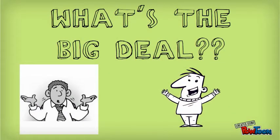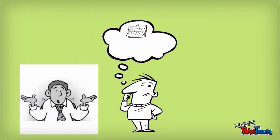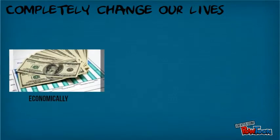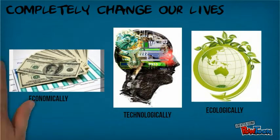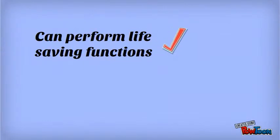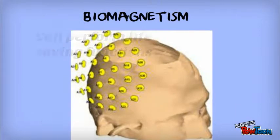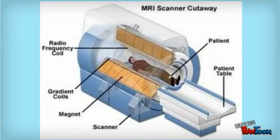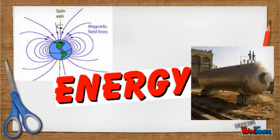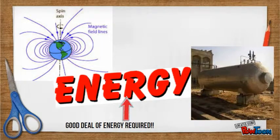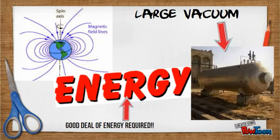So what's the big deal about superconductors? What do we get out of them in our everyday lives? Superconductors have the potential to completely change our lives economically, technologically, and ecologically for the better. Superconductors can also prove life-saving in the field of biomagnetism. Most MRI systems use a superconducting magnet consisting of many coils of wire through which current passes, creating a magnetic field. Maintaining such a large magnetic field requires a great deal of energy, which is accomplished via superconductivity kept in liquid helium insulated in a vacuum.